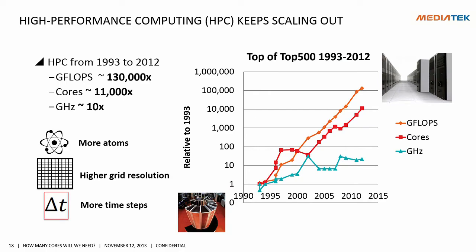In the area of high-performance computing, we see a very similar trend. The Top500 list from 1993 to 2012 shows gigaflops increased by 130,000 times, while clock rate only increased by 10 times. In the same period, the number of cores grew by 11,000 times. When scientists can shorten the time for their tasks from months to weeks to days to hours, they won't stop there. They'll go out and look for bigger problems — simulating more atoms at higher grid resolution and more time steps.